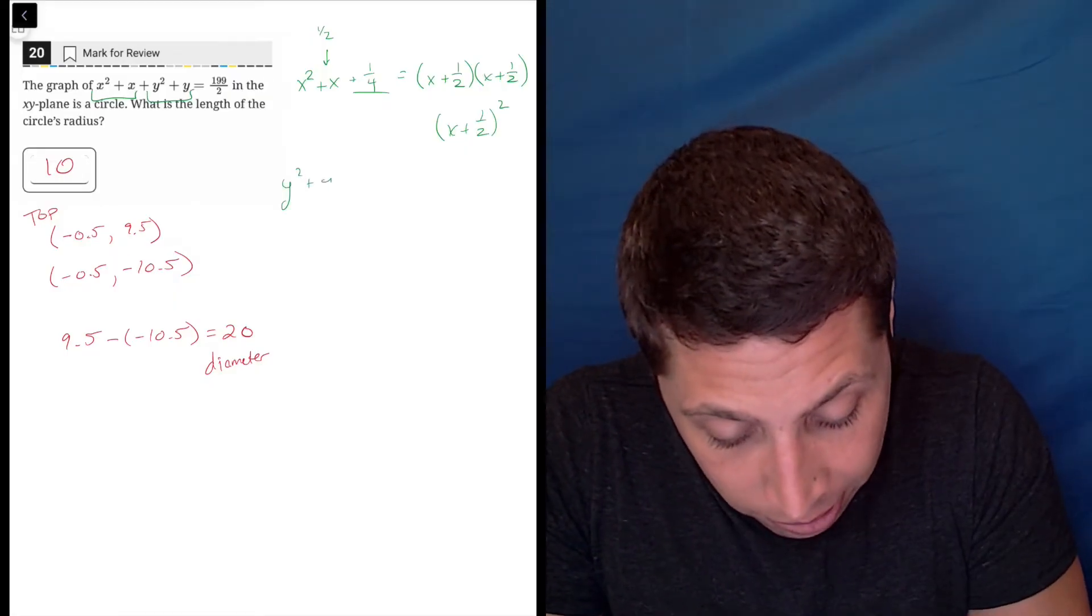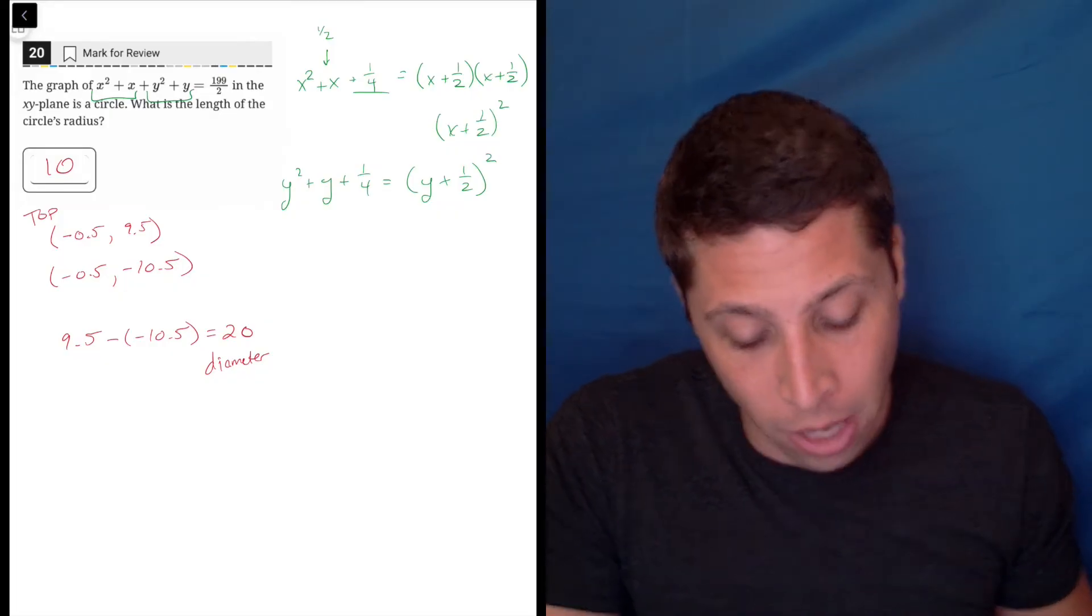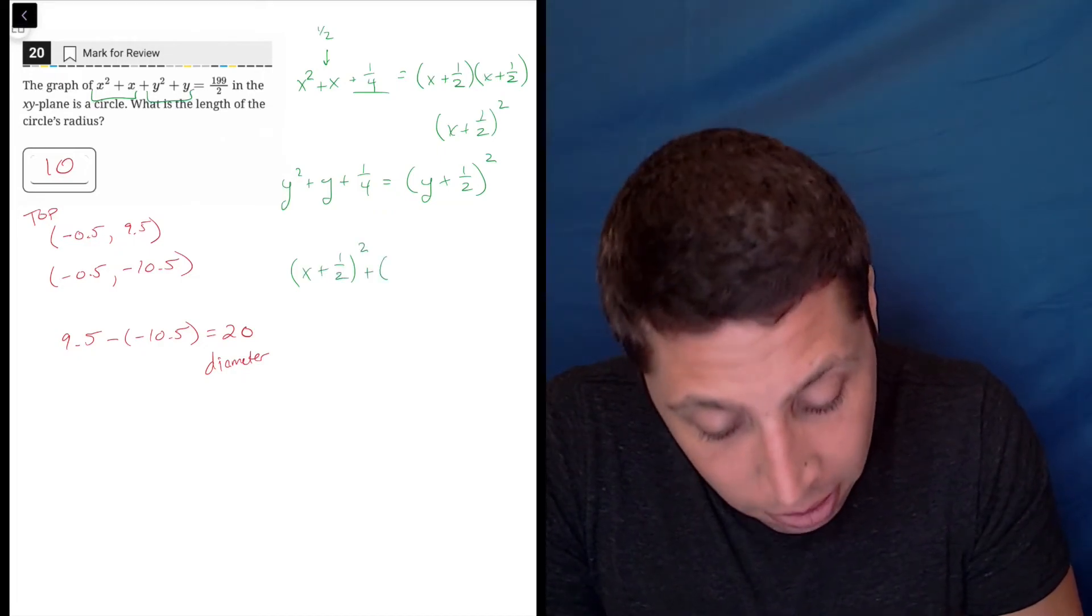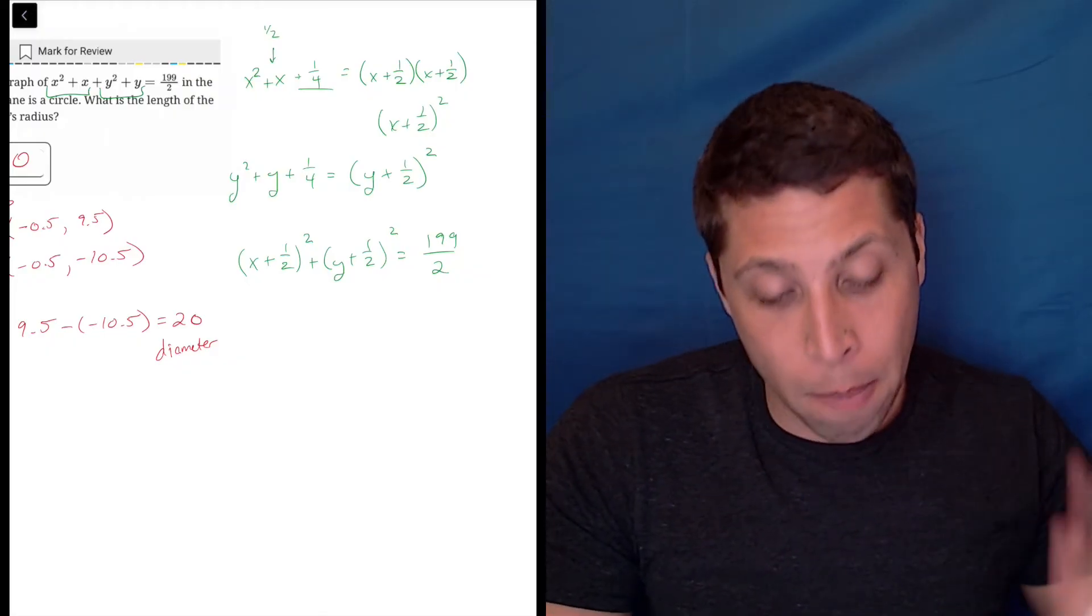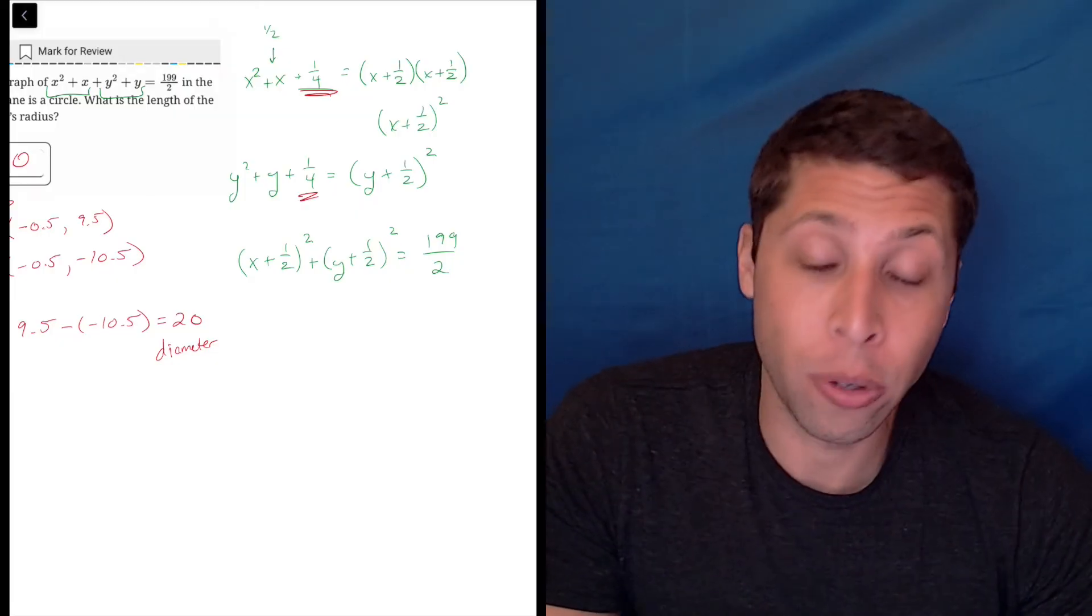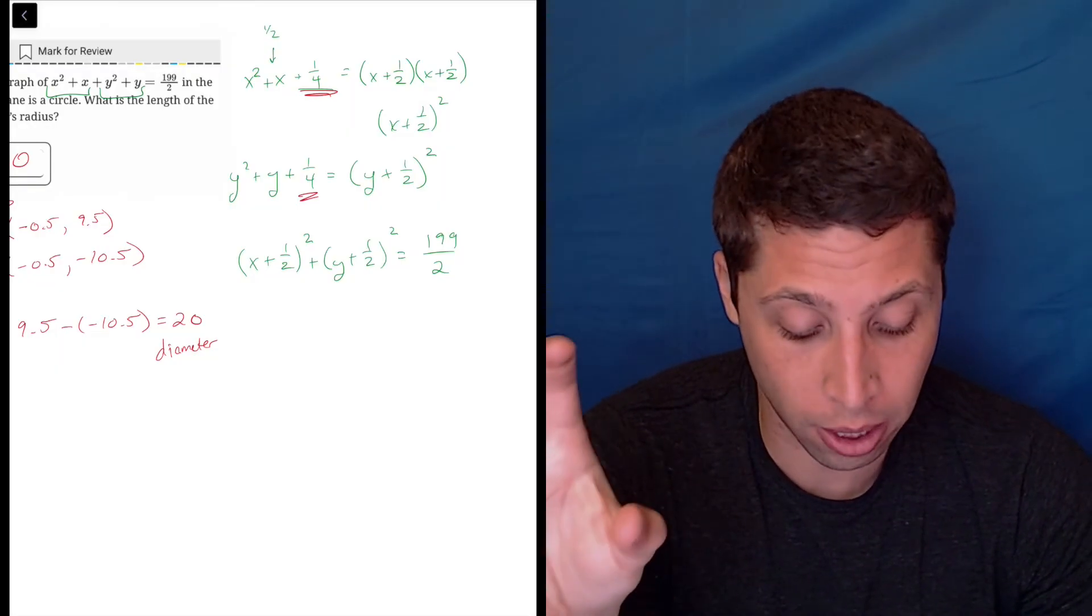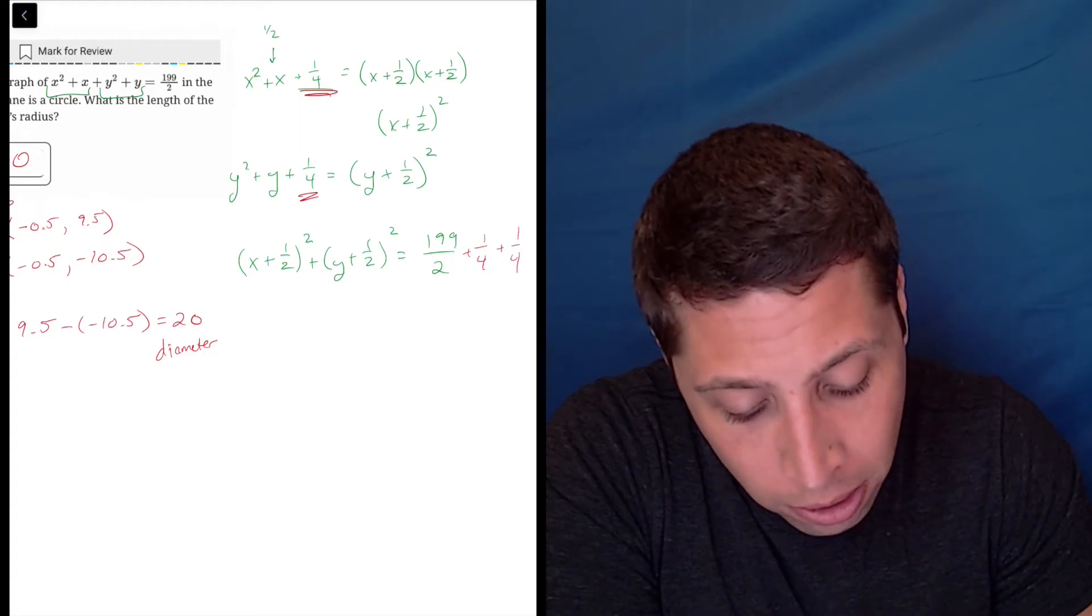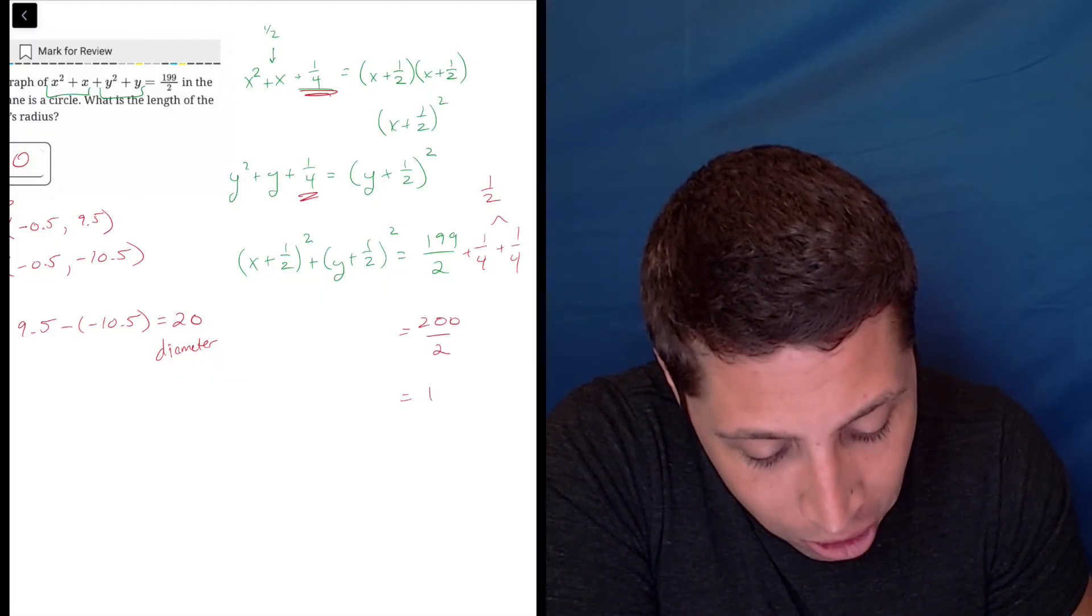And we would never write it like that. We would write it as x plus one half squared because that's kind of how the normal circle equation is going to look. So if we did the same thing for the y's, luckily it's the same number, we would be getting a term that we can write as a squared term. And then now we have x plus one half squared plus y plus one half squared equals 199 over 2. But we did a bad thing. We just went and added some random numbers to our equation. You can't do that. So in order to add them, we need to balance things out. So we add them on the left side, they're kind of now buried in those parentheses terms. But to balance them out, we have to add them to the right side as well. So we're going to add a fourth and another fourth, that makes a half. So 199 halves plus one half is going to be 200 halves, which is 100.